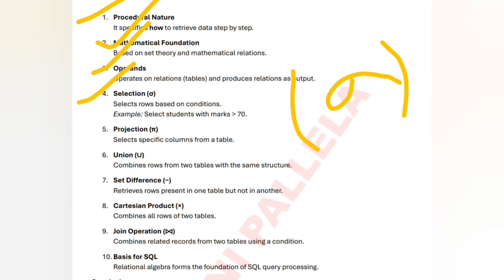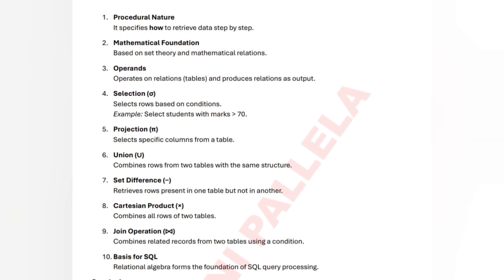Third, operands operate on relations — relations are tables — to get an output. Next is selection: the selection symbol (σ) — in the brackets, it selects rows. For example, select students who scored below 60, or select students who scored above 70. Next is projection: the projection symbol (π) shows the columns in a table.